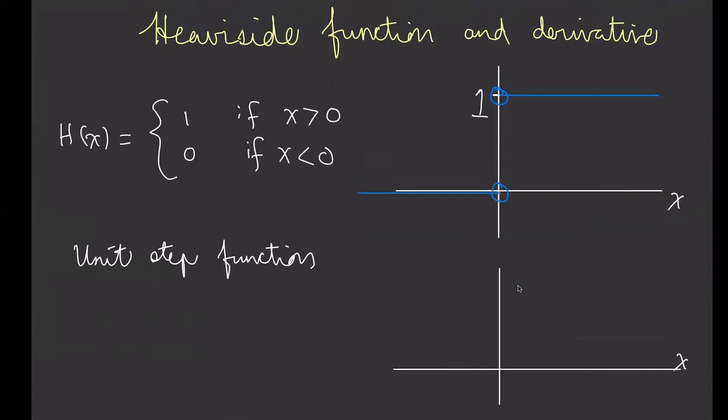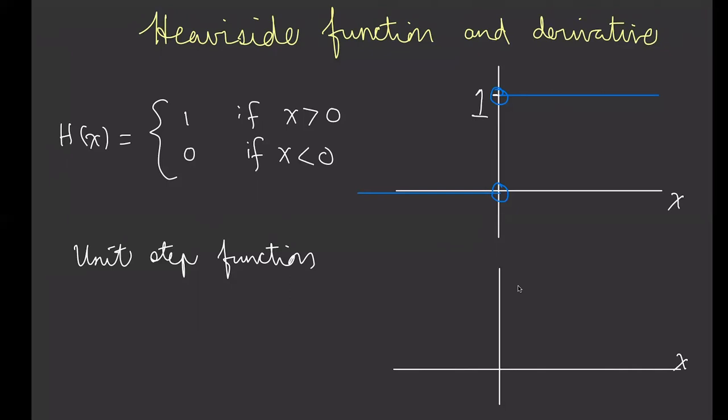What I'm interested in is the derivative of this function. I'm going to think about this graphically. In this diagram I'm going to plot the graph of the derivative h prime of x, whereas what I have above is the function h of x. The derivative is the slope of the tangent line at each point. If I draw the tangent line at a point on the flat region, the tangent line is horizontal — its slope is zero. So essentially almost everywhere the slope is zero.